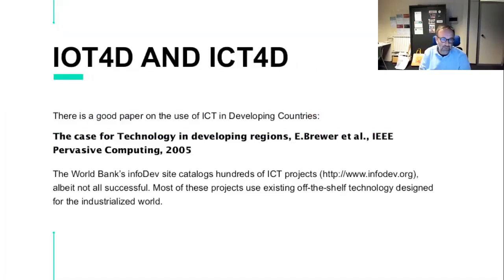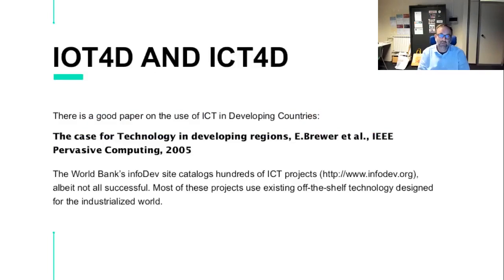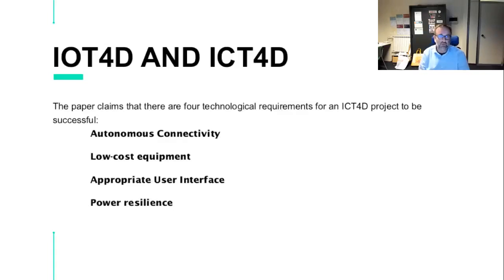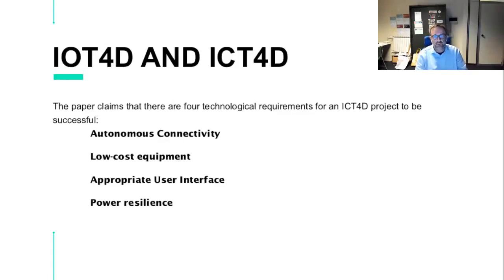As someone who had been working in ICT4D for some time, when I started learning about Internet of Things and sensor networks, I checked whether it really fits with ICT4D. A really interesting paper comes from the TIER group in Berkeley — Eric Brewer — written in 2005, still very relevant today: 'Case of Technology in Developing Regions.' They checked lots of ICT projects all over the world and analyzed why some were successful and some weren't, concluding there are four technological requirements for an ICT4D project to be successful: autonomous connectivity, low cost equipment, appropriate user interface, and power resilience. If you think about IoT, it actually fits these four needs — these devices can communicate with each other without needing a SIM card or existing infrastructure, they're really low cost, and they're extremely low power.